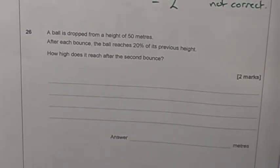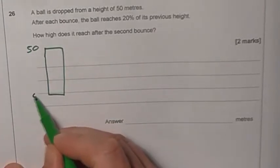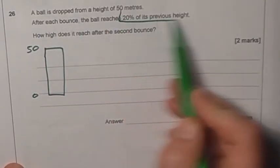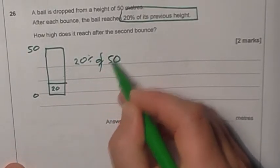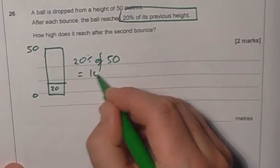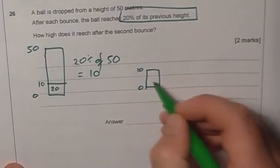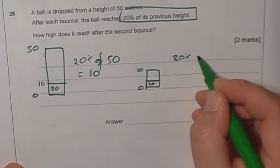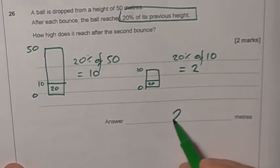Next one. A ball is dropped from a height of 50 metres. After each bounce, it reaches 20% of its previous height. How high does it reach after its second bounce? I'd like to draw a little diagram. There's my 50 metres. After the first bounce, it's going to be at 20%. So first thing I want to do is work out 20% of 50. Well, 10% is 5, so 20% must be 10. So it must reach 10 metres. That means that my second bounce is from 10, and it's going to reach 20% of 10. So 20% of 10, 10% is 1, 20% must be 2. So how high does it reach after its second bounce? It reaches 2 metres.